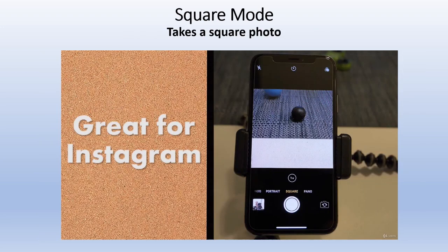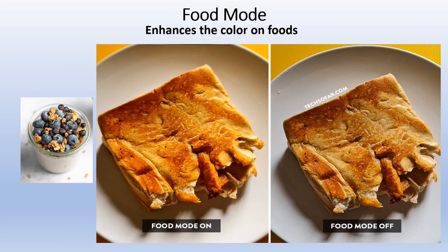Square Mode is great for Instagram — it gives you the best settings for the pictures they want. Many social media platforms will only show a more square image, so this is the mode to consider when taking pictures for those platforms.